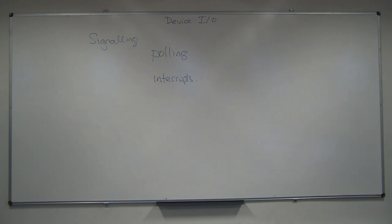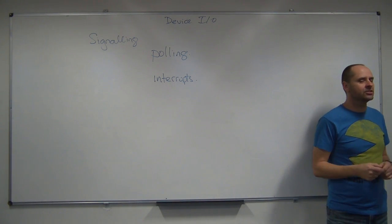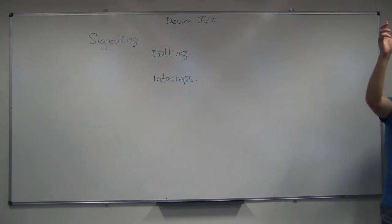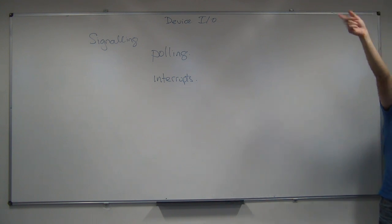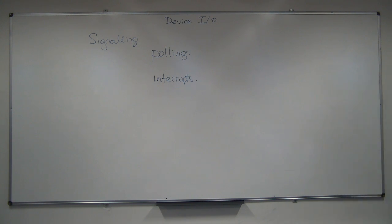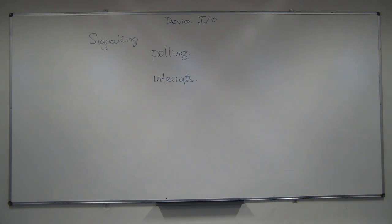Let's talk about interrupts first. Interrupts are signals that a device sends to say, I need attention. We've got a human equivalent for this — stick your arm up. That's the signal to someone who's speaking that you want to say something. I'm interrupting you, I've got something I want to say. It isn't the person who's speaking who generates the interrupt — it's the person who wants to interrupt, who wants to say something, who needs attention, who generates the signal.